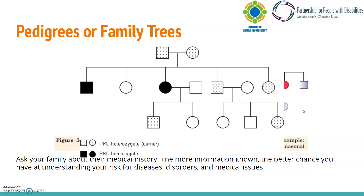Finally, each row lower represents another generation in the pedigree, so we can better understand who is at the same generation level as grandparents, parents, children, and later generations. From this pedigree, we can see that of the five children in the second row, two have PKU, two are carriers, and one is not affected at all. This is just one example of a pedigree for one disorder, but a pedigree like this can be created for each disease, or can be complex and include all diseases across an entire family.